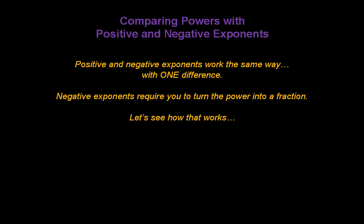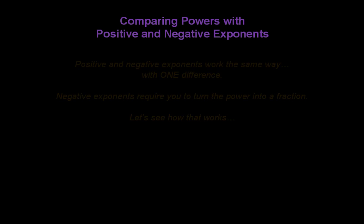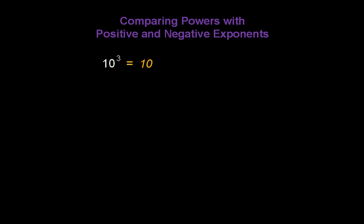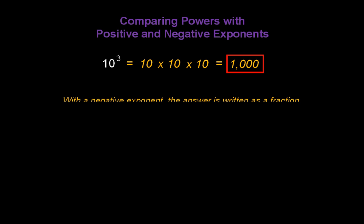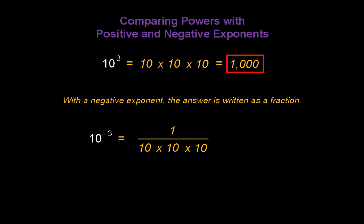Comparing powers with positive and negative exponents is easy. Positive and negative exponents work in much the same way, with just one difference: negative exponents require you to turn the number with the power into a fraction. We know that 10 to the third is 10 times 10 times 10, and that answer is 1000. With a negative exponent, the answer is written as a fraction. So 10 to the negative third is still 10 times 10 times 10, but it's written in the denominator of a fraction with 1 in the numerator — so the answer is 1 over 1000.